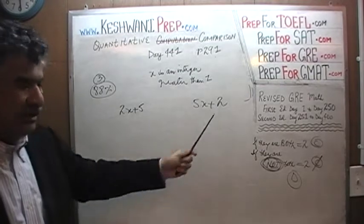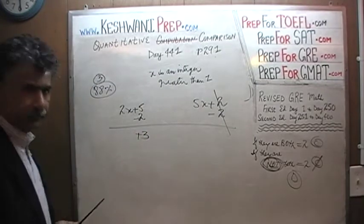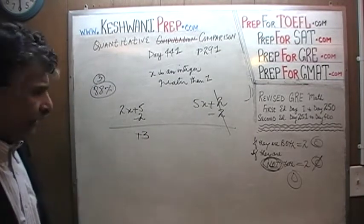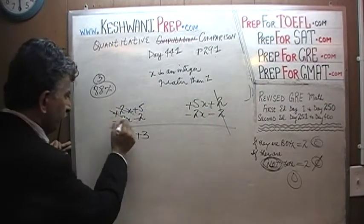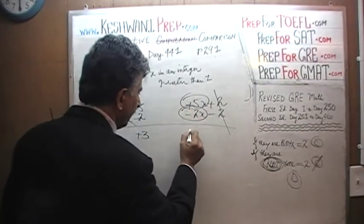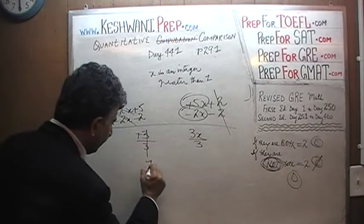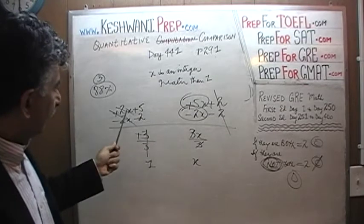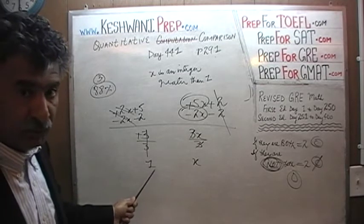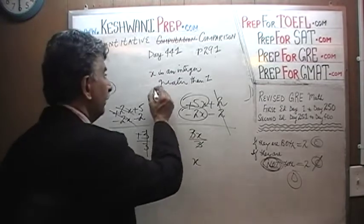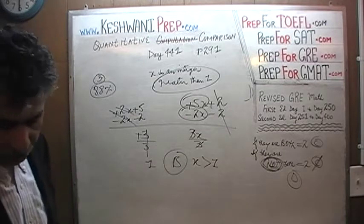We see a 5 here and a 2 here — why not subtract 2 from both columns? The 2 goes away and Column A becomes 2x plus 3. Now subtract 2x from both columns — positive 2x and negative 2x cancel, and Column B becomes 3x. Divide both columns by 3: the 3 goes away and we end up with 1 versus x. They are asking us to compare 1 versus x, after having been told that x is more than 1. Of course if x is more than 1, the answer is B.